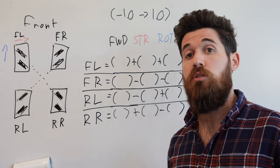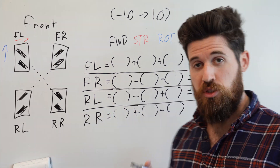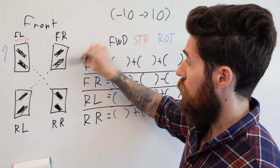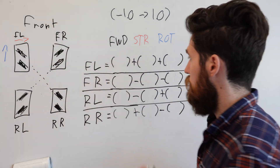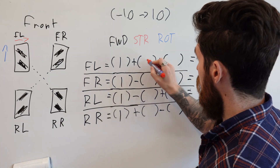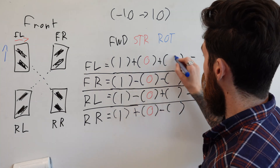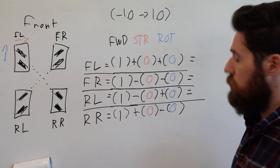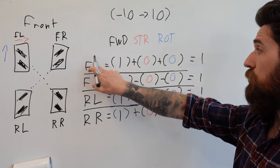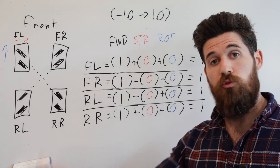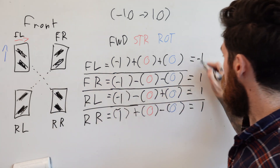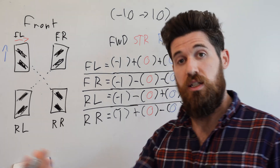Let's do a quick example. The simplest one: we just want to move forward. We give a forward value of 1 — as if pushing all the way up on the right joystick — a strafe value of 0, and a rotation value of 0. Plugging that into all four equations, we end up with a full value of 1 on all four motors: front left, front right, rear left, and rear right all move forward. Conversely, a forward value of negative 1 gives negative 1 on all four motors, moving directly backwards.